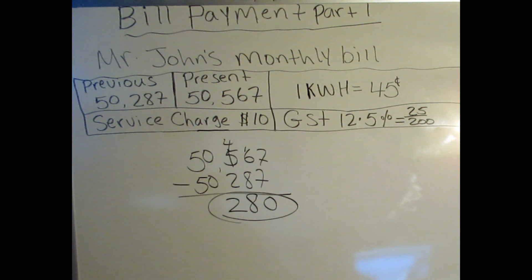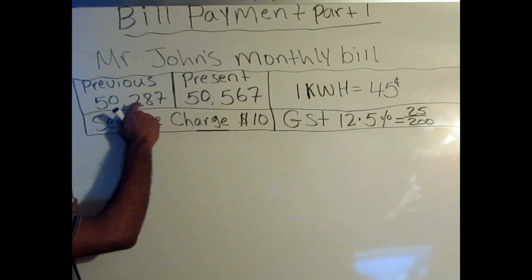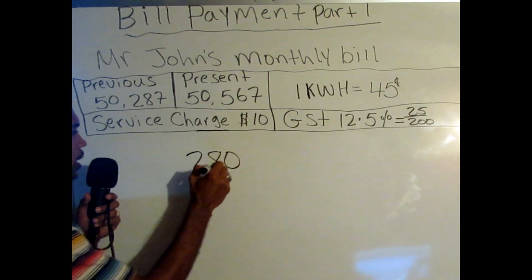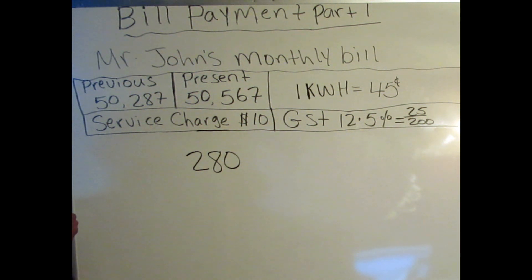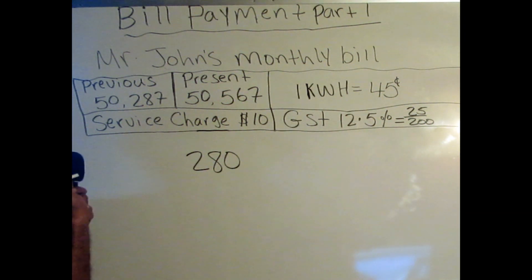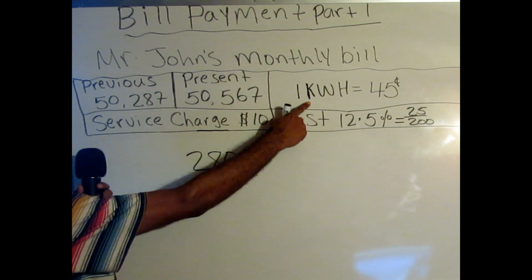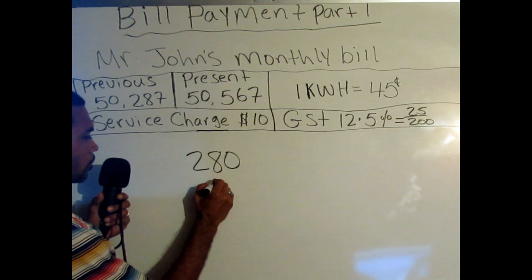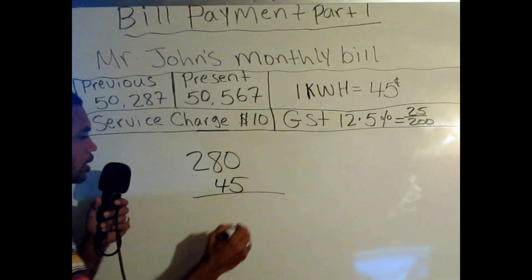That's step one to solving a light bill like this. When we minus our present from our previous, we got 280 kilowatts that Mr. John used. So in order to find out how much his bill is at the moment for those 280 kilowatts, we have to multiply it by 45 cents, because the bill says every kilowatt Mr. John uses is 45 cents, and he used 280.